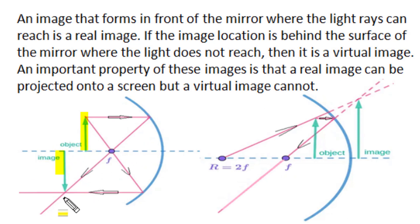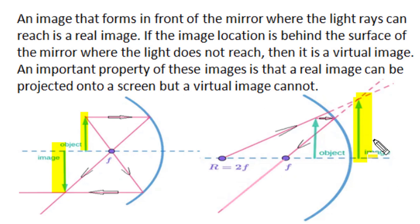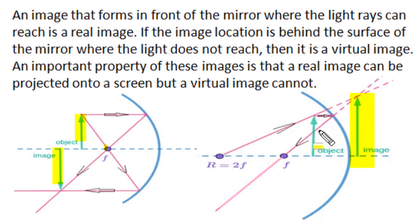A concave mirror produces a virtual, erect, and enlarged image when the object is placed between the principal focus and the pole. When the object is at infinity, a point-sized image forms at the principal focus. As the object moves from infinity to the center of curvature, the image shifts from the principal focus to the center of curvature, increasing in size, forming a real and inverted image. When the object is at the center of curvature, the image is the same size and also at the center of curvature.